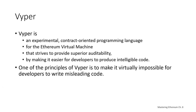Viper is an experimental smart contract oriented programming language for the Ethereum virtual machine that strives to provide superior auditability by making it easier for developers to produce intelligible code — code that's understandable and readable. When you're doing a smart contract audit, you need to read the code, and it's usually someone other than the one who created it. One of the principles of Viper is to make it virtually impossible for developers to write misleading code.